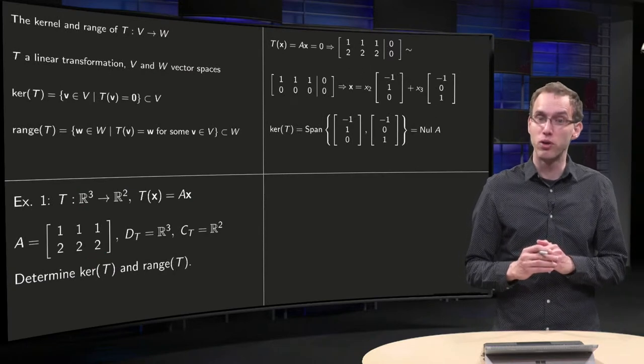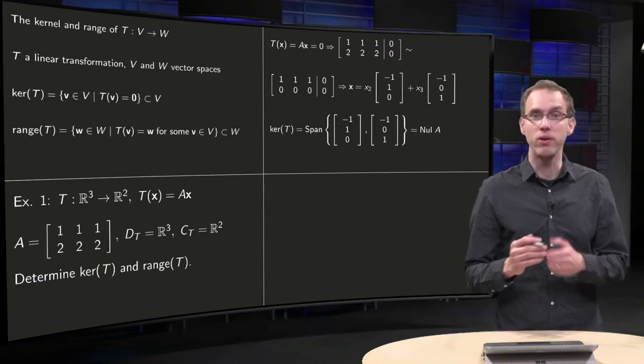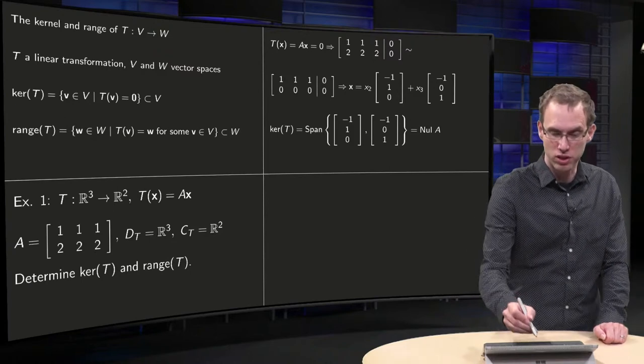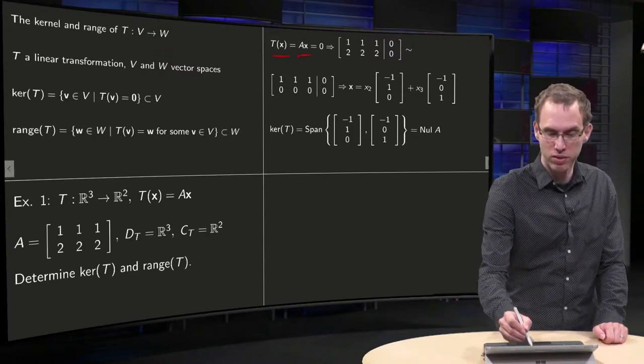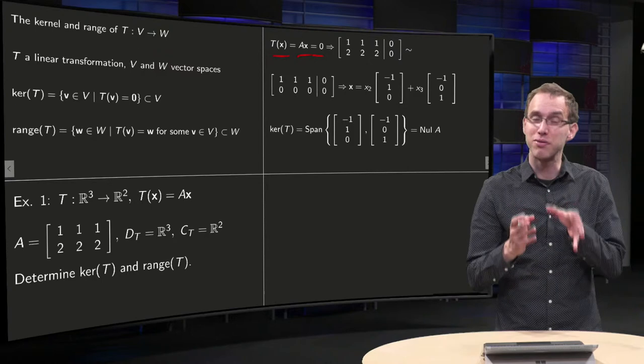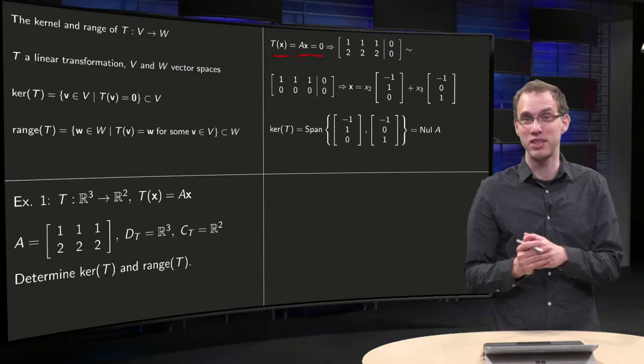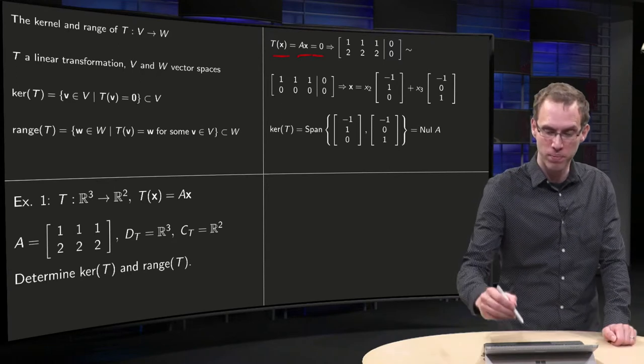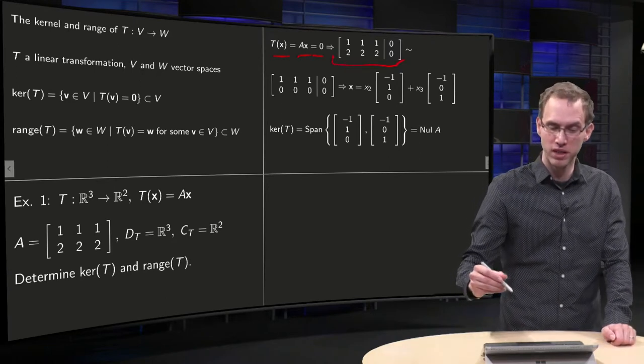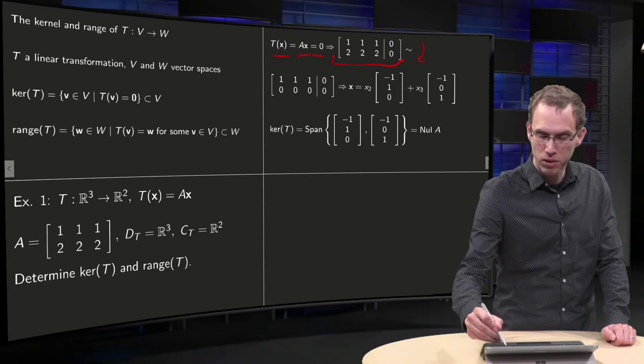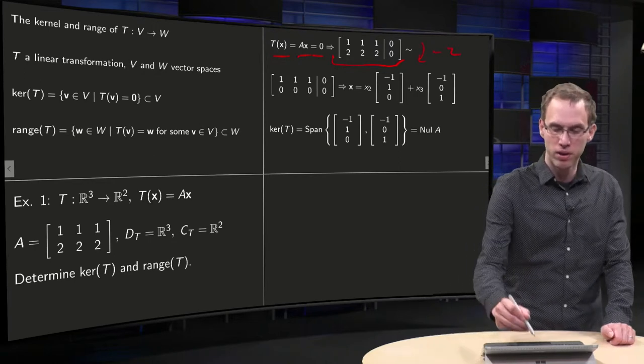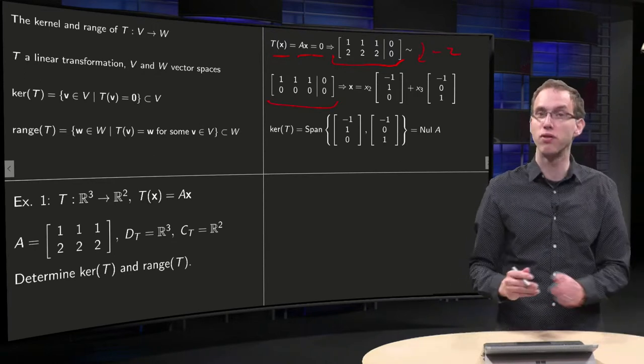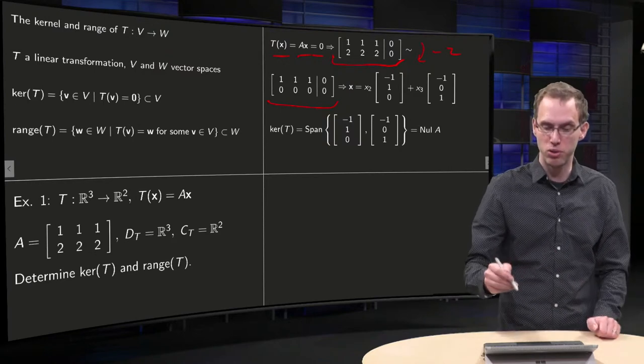Now let's determine the kernel first. The kernel is the set of all vectors X such that T(X) equals A times X equals zero. So you have to find the vectors X such that A times X equals zero. Well, you know how to do that, that's just solving a linear system. So you form the augmented matrix, row-reduction step over here, now you have the row-reduced form, and you can write down the general solution.